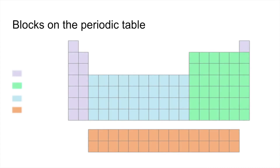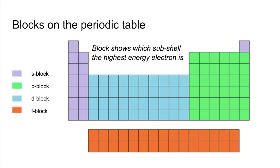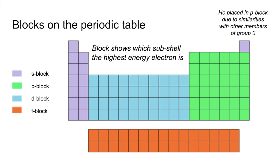Finally, the blocks on the periodic table. There's a colour coding of the periodic table into four blocks: the S block, the P block, the D block, and the F block. The block shows us which subshell the highest energy electron is in. Helium is a slight exception — in many periodic tables it's placed with group 0, making it look like a P block element, but it's actually an S block element because its configuration is 1s2, so its highest energy electron is in an S subshell. It's placed with group 0 because it has such similar properties to the other noble gases.